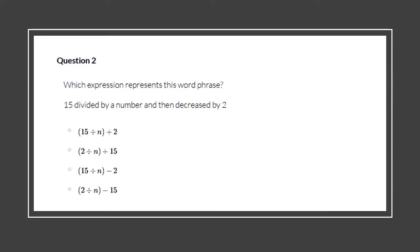Number two: which expression represents this word phrase — '15 divided by a number and then decreased by two'? The first thing it wants us to do is 15 divided by a number. Then decreased by two. But how do I make sure that my first part is done first? I need to consider 15 divided by a number, and then decrease by two.